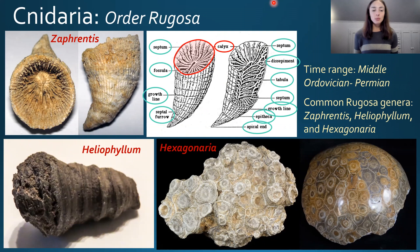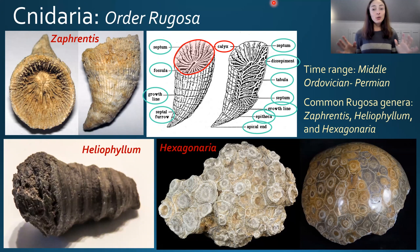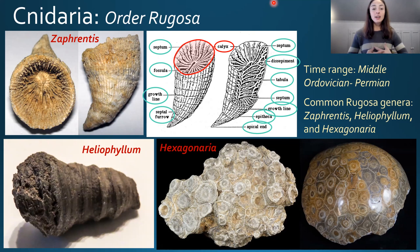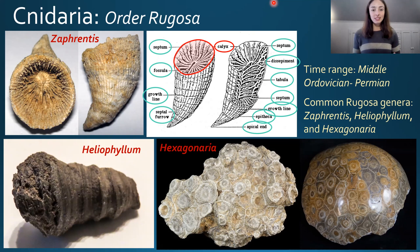The order Rugosa is nicknamed horn corals because most were solitary, shaped like horns. However, they did have colonial genera, such as Hexagonaria. Most rugose corals, like Heliophyllum and Zaphrentis, were solitary and horn-shaped. Some more pristine examples like Zaphrentis, labeled in the middle of the slide, display a number of features we'll go through step by step.